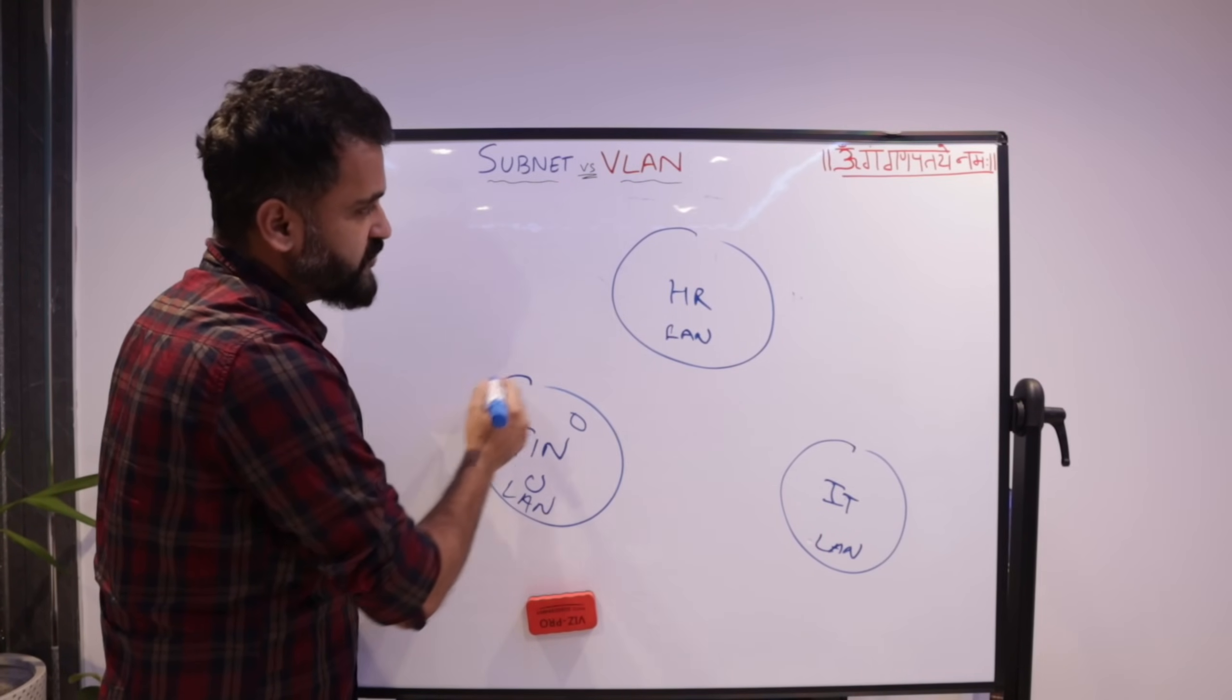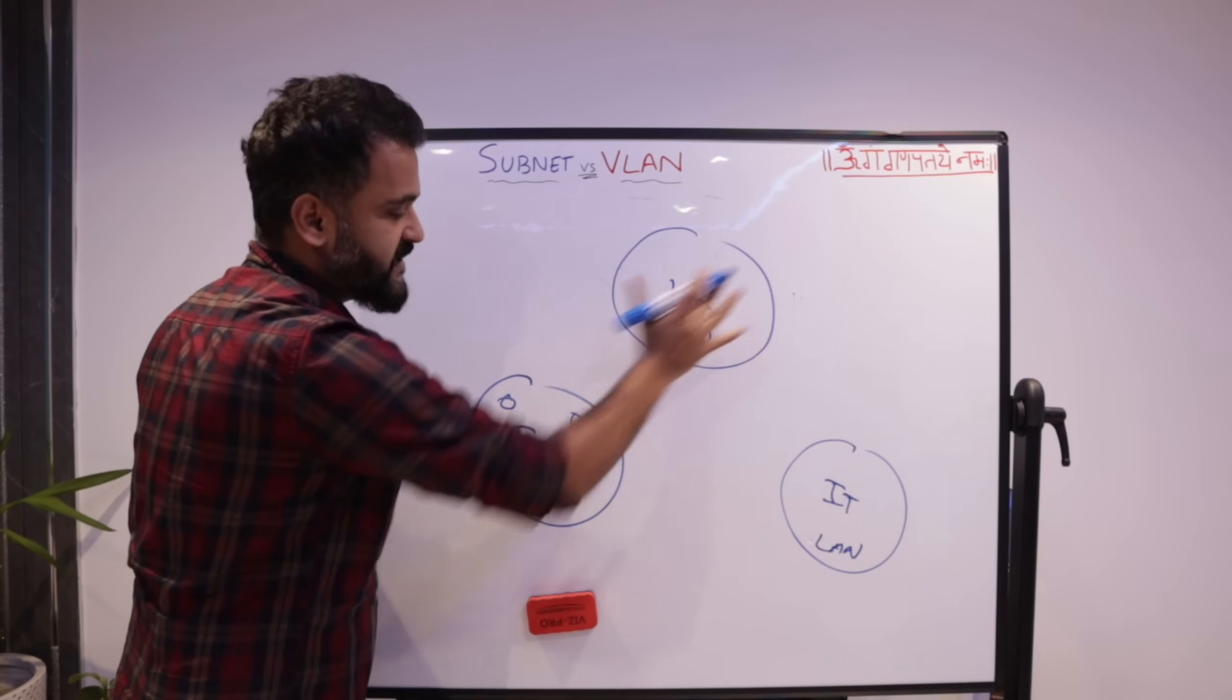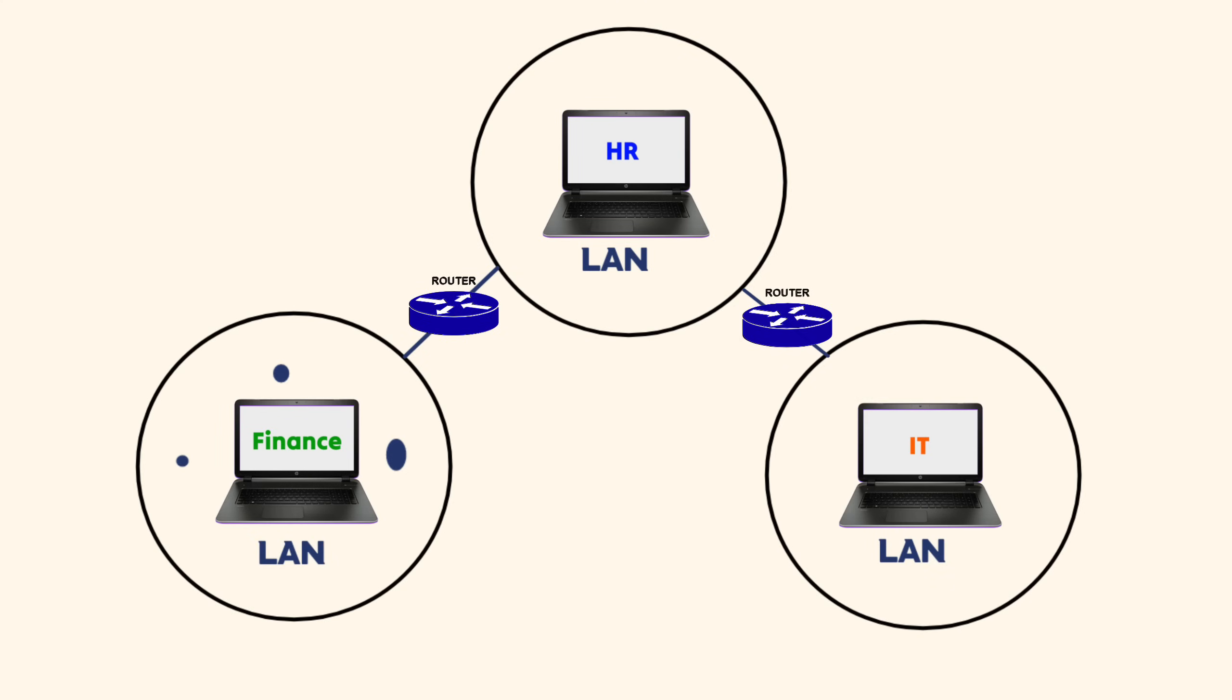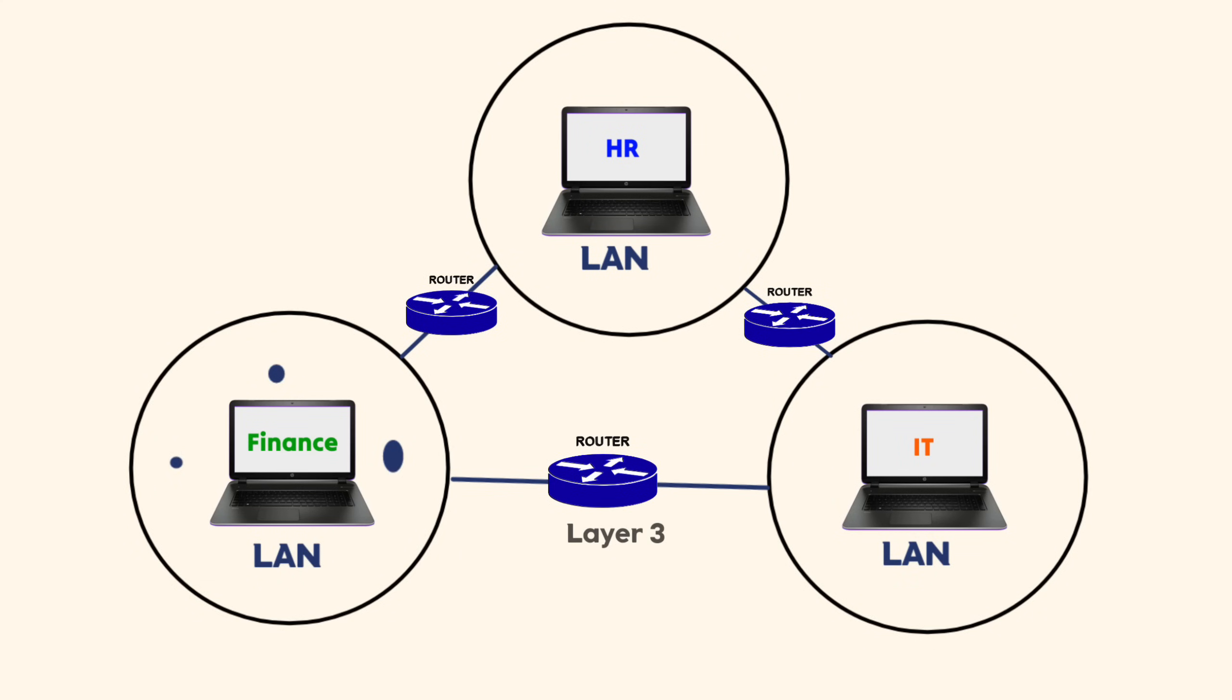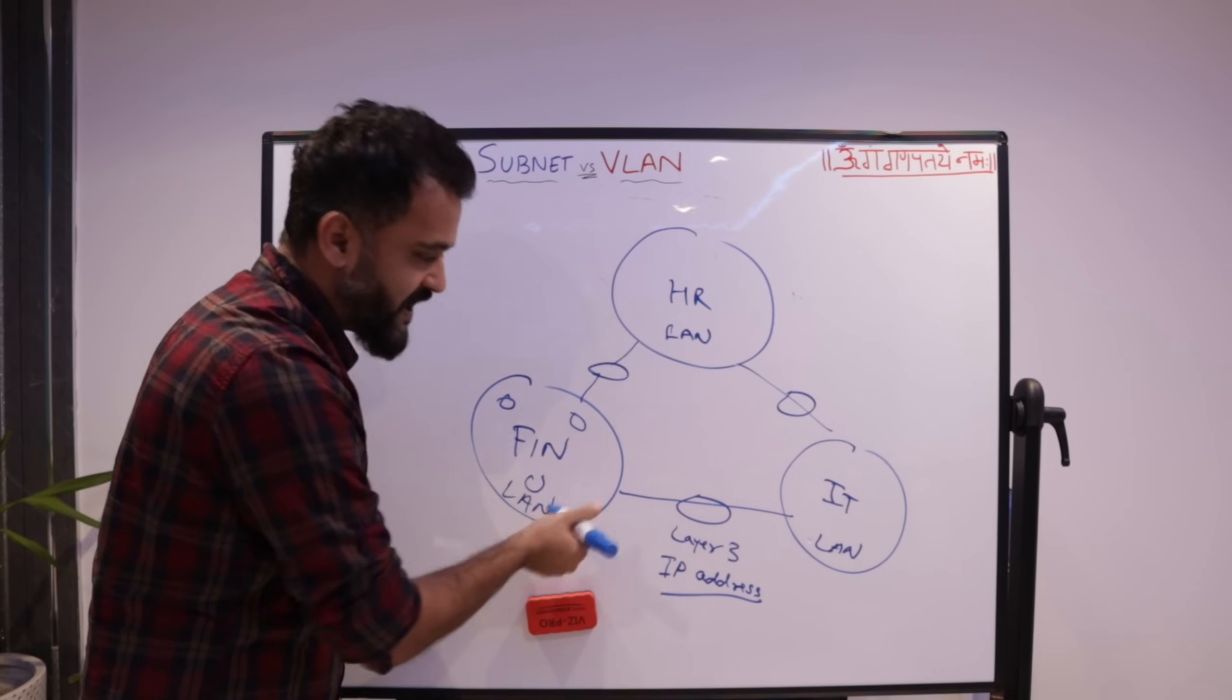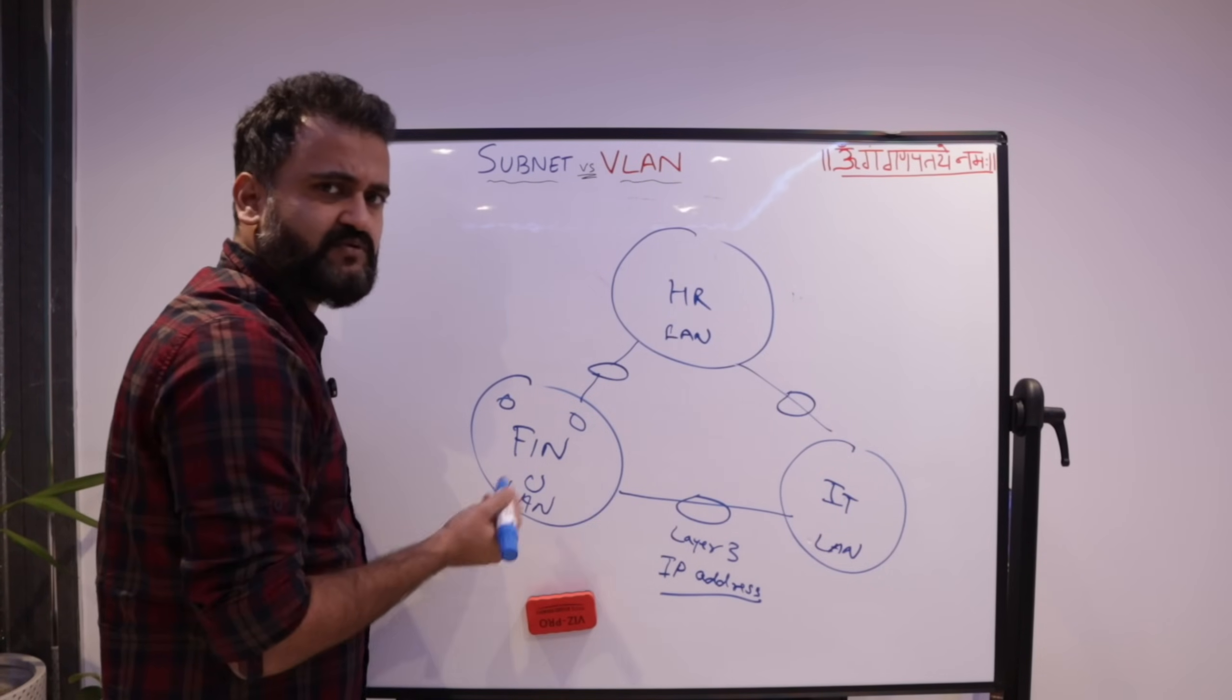But now what you have done, you have actually physically separated it using subnetting. So this would be in a different subnet range, this would be in different subnet range. And if these two subnets want to talk, then you will have a router placed in between. So this router is basically working at layer three, subnetting happens at IP address level. So now this is the way you do it. But for that you have to buy the router, you have to have cabling done properly. And then obviously, these routers have its own cost.